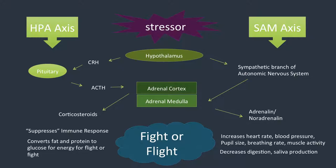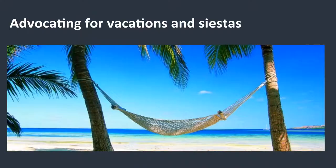Here's an overview of the whole response. You have your stressor, and you're going to lead to the production of both the sympathetic adrenal-medullary axis as well as the HPA axis. The HPA axis results in our corticosteroids. The SAM axis results in adrenaline and noradrenaline. We either suppress the immune response and convert fat and protein into glucose, or we increase heart rate, blood pressure, et cetera, and decrease digestion and saliva production.